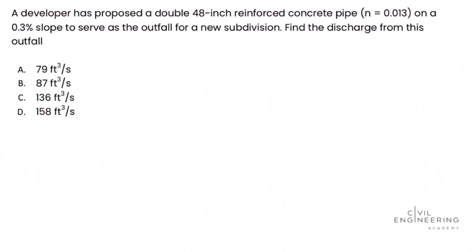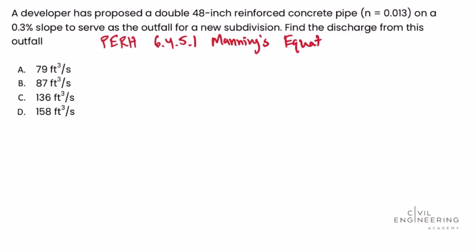To solve this problem we're going to turn to the PE reference handbook — version 1.2 at the time of this recording — and look specifically at section 6.4.5.1. We're given what's called Manning's equation, which we'll use to solve this problem. Manning's equation is given as Q equals 1.486 over N, times A, times R subscript H to the two-thirds, times S to the one-half.